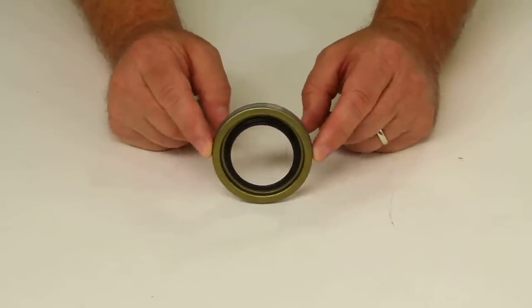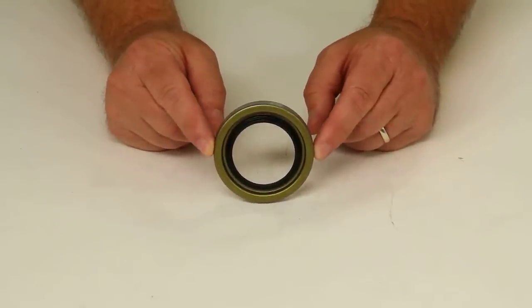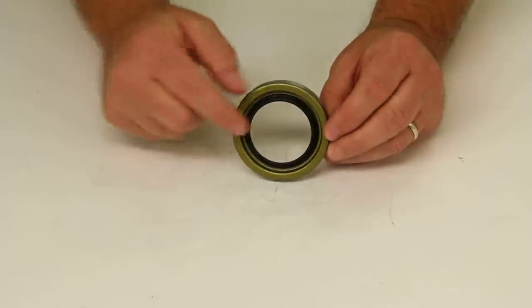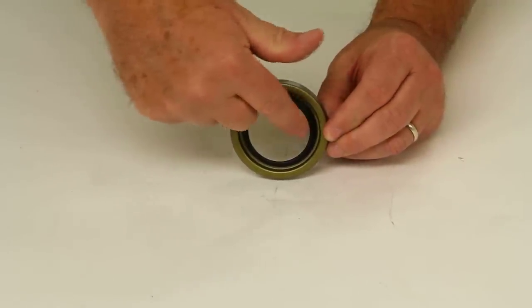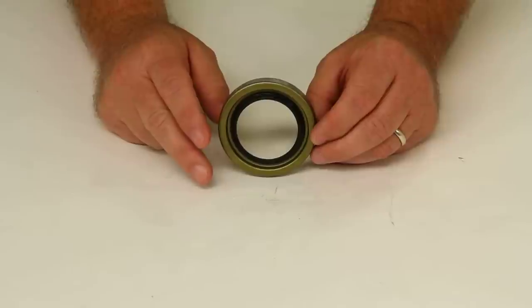The dimensions on this: the overall diameter is 2.722, and the internal or inside diameter of the seal is 1.750.